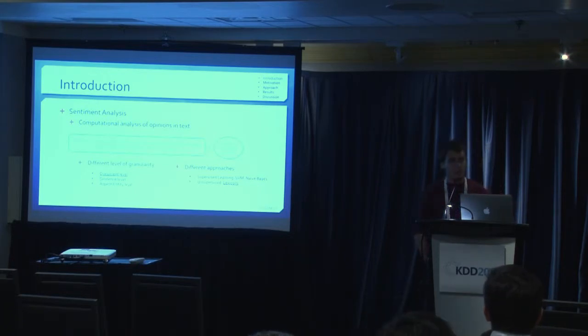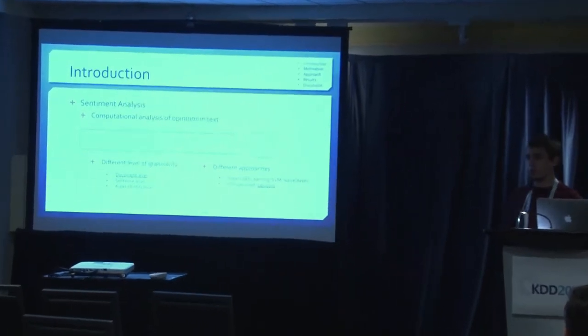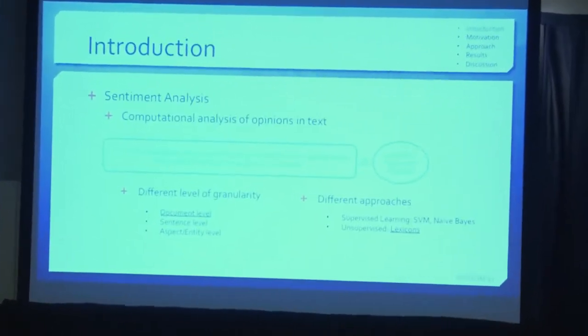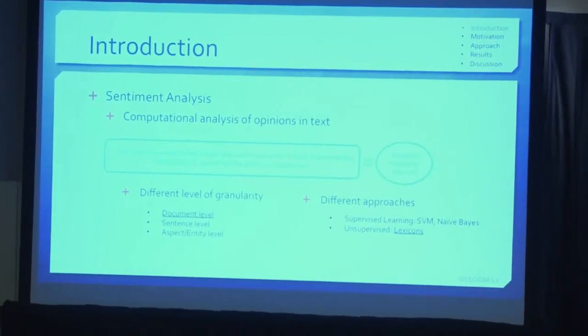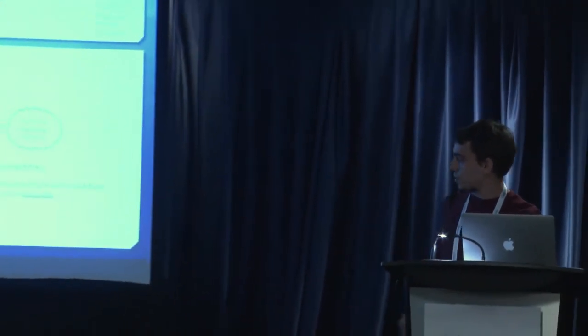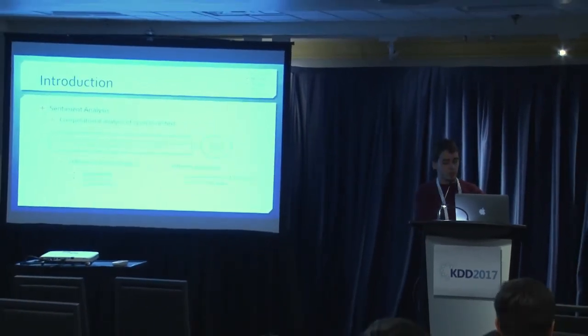There's a different level of granularity. I'll be focusing on the document level. That is, doing sentiment analysis on the whole document. But you can also do that on the sentence level, like the previous speaker mentioned. Aspect entity level, actually. That's what the previous talk. And so there are different approaches. Supervised learning works well. So we have a SVM classifier, a naive Bayes classifier, et cetera. And you've got what we call unsupervised method that most of the time uses a lexicon, which is what we will be focusing on.